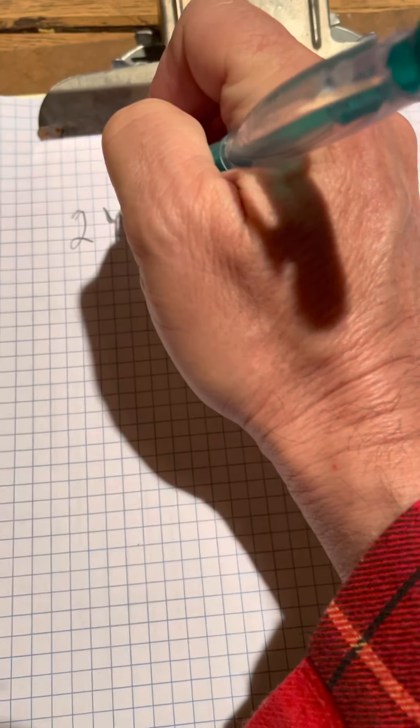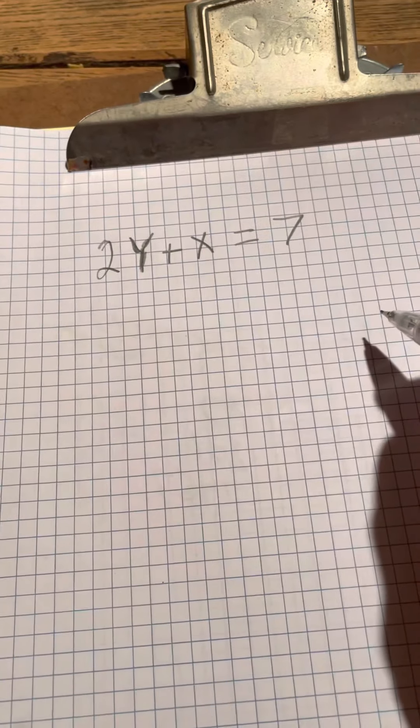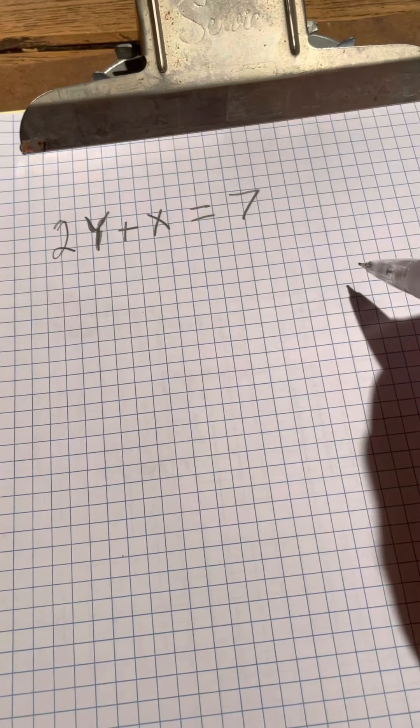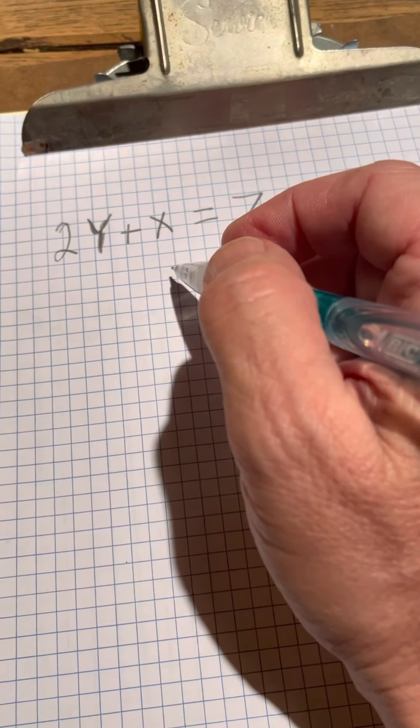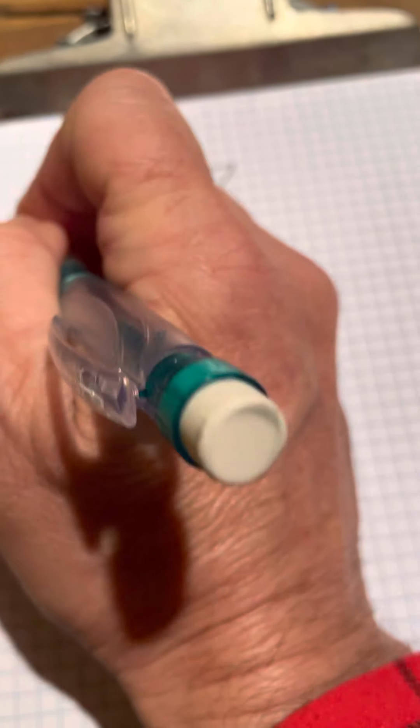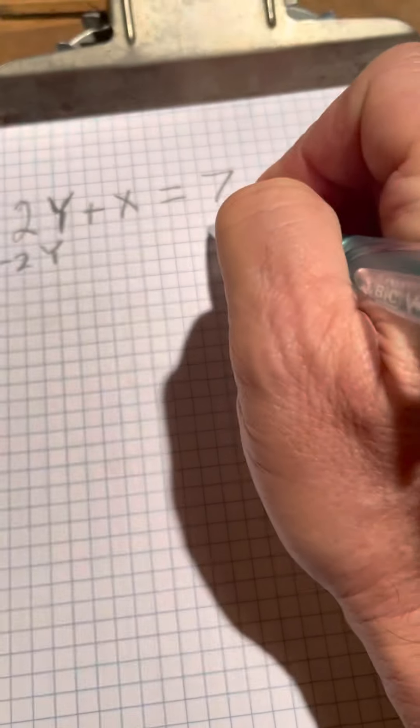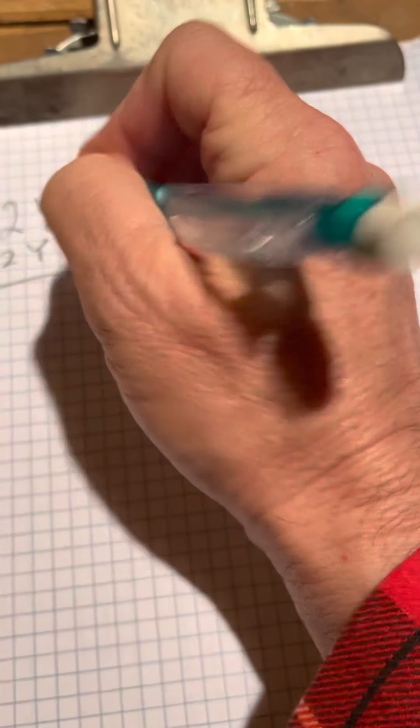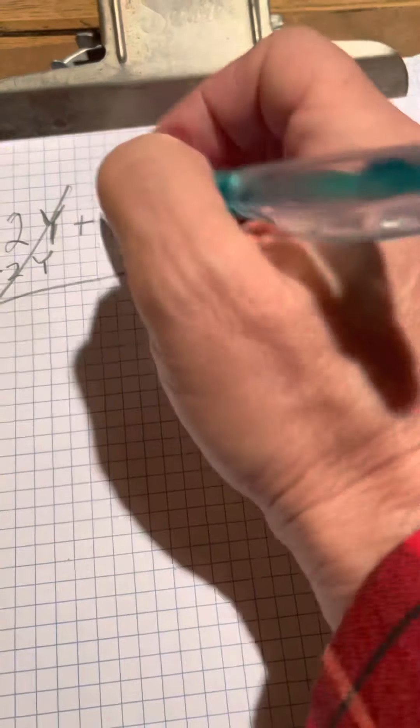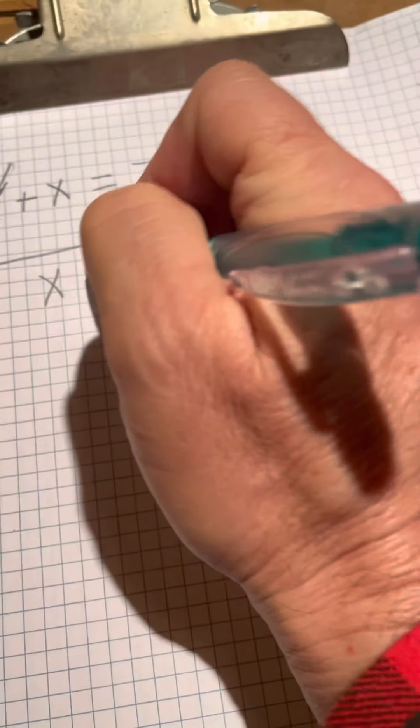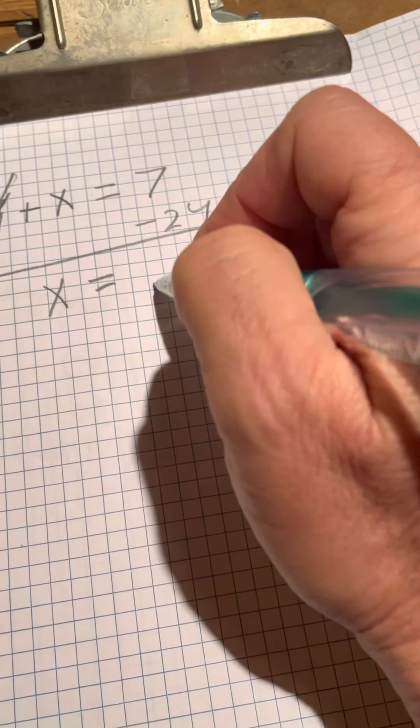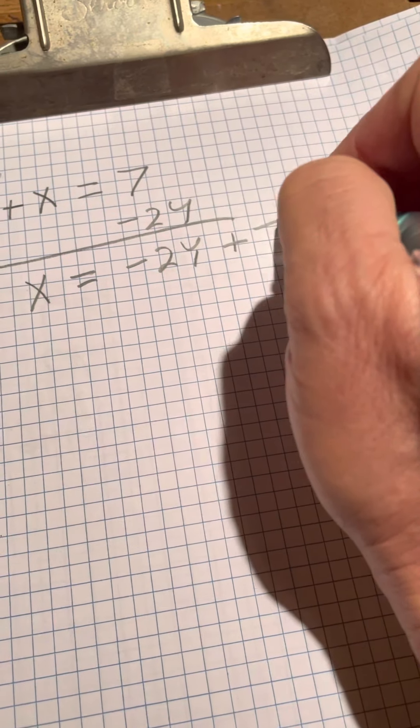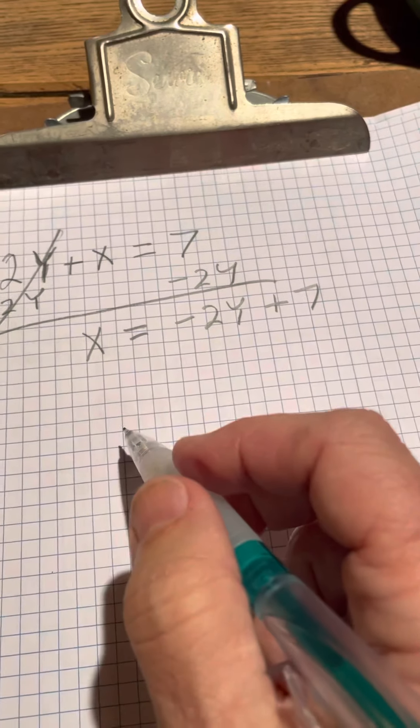All you want to do is make sure you have the equation saying either x equals or y equals. In this situation, you've done this a million times. You subtract 2y from both sides, draw the line. This cancels out. You bring down this, x equals negative 2y plus 7. That's it.